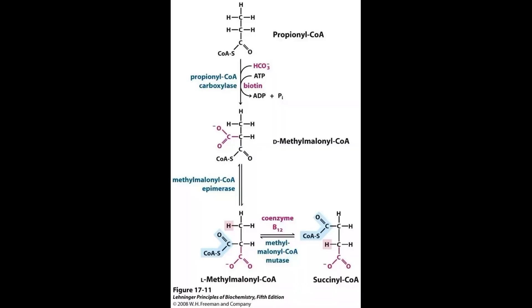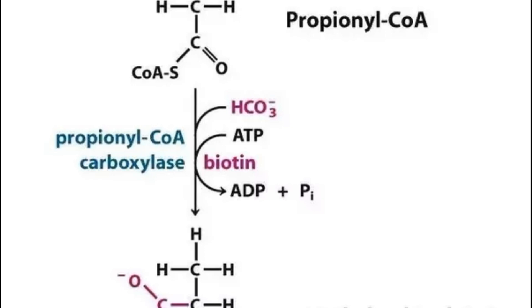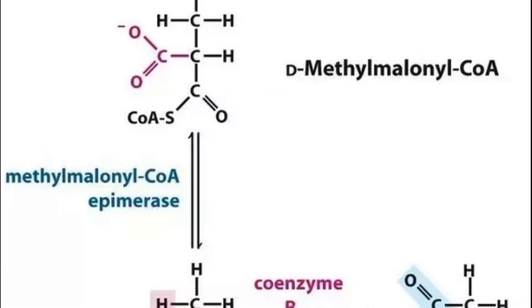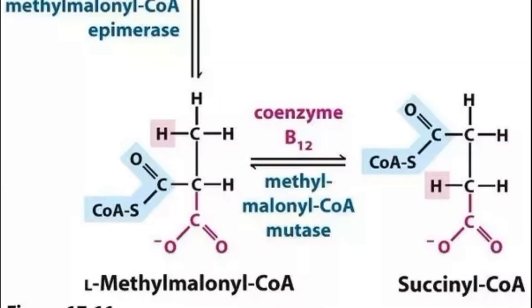With the odd chain, it is the same way until the final three carbons are reached. The propionyl coenzyme A is metabolized by a three-step pathway. The first enzyme is propionyl coenzyme A carboxylase, and then you get D-methylmalonyl coenzyme A. After the enzymatic action of methylmalonyl coenzyme A epimerase, you're going to get L-methylmalonyl coenzyme A. Finally, succinyl coenzyme A is produced by the action of methylmalonyl coenzyme A mutase.